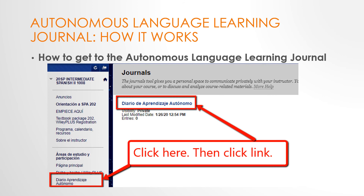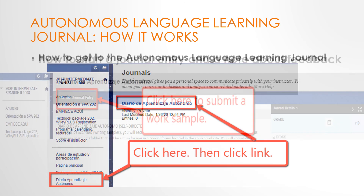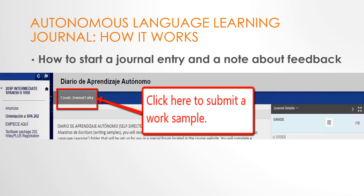How it works: to enter the Autonomous Language Learning Journal area, first click on the link located on the Blackboard menu. On the left, you'll see a blue hot link to the journal area — click on that. To start a journal entry: in the upper left corner, you'll see a link that says 'Create Journal Entry.' Click here to submit a work sample. Once you get started, the area to the right is where your running grade will appear using the rubric discussed earlier. There may also be instructor feedback located there. Otherwise, instructor comments are generated below your submitted work sample entries.